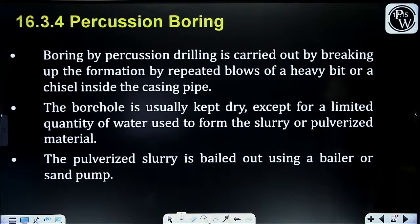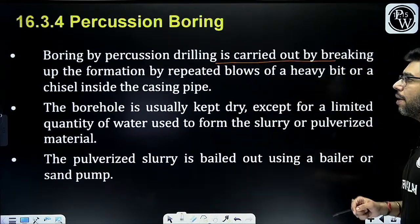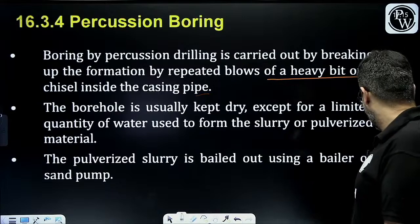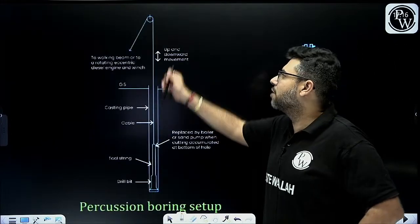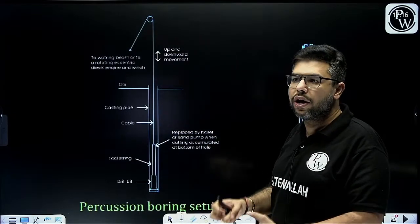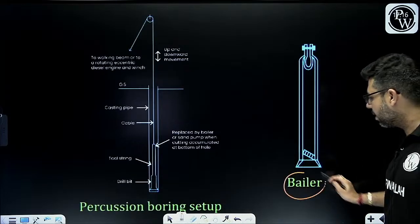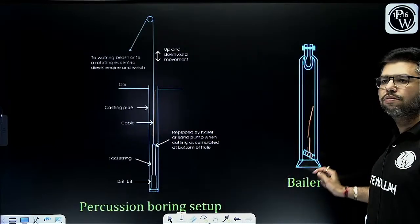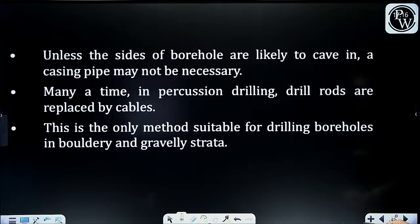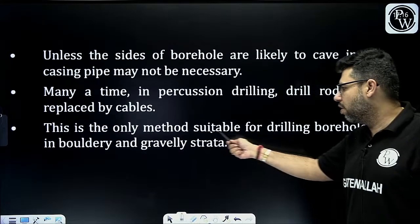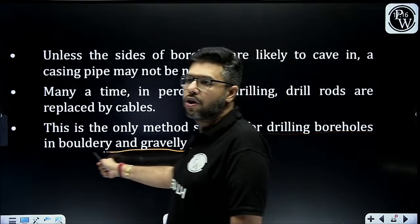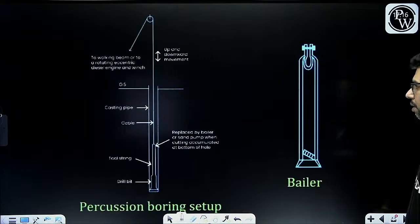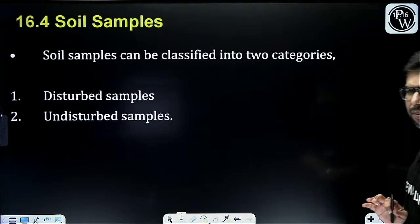Percussion boring is carried out by breaking up the formation with repeated blows of a heavy bit or chisel inside the casing pipe. The chisel is lifted and dropped repeatedly, causing the soil to break and come out. Then a baler is inserted to collect the soil samples. This method is only suitable for drilling boreholes in bouldery and gravelly soil. This much knowledge about boring methods is more than enough - no need to go into more detail.